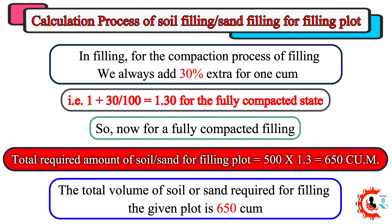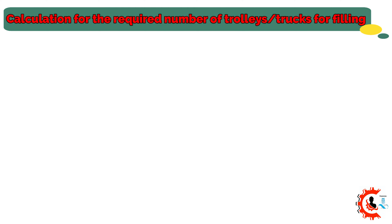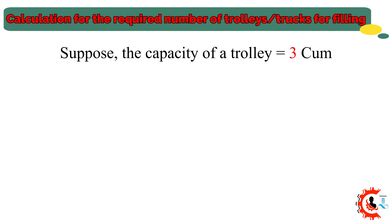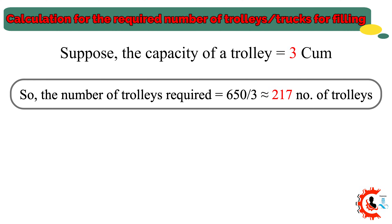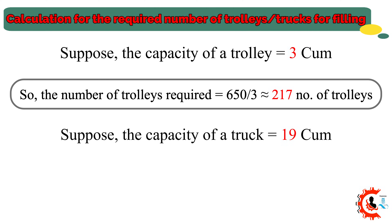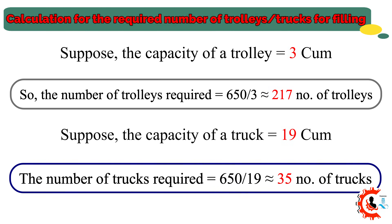The total volume of soil or sand required for filling the given plot is 650 cubic meters. For the required number of trolleys, suppose the capacity of a trolley equals 3 cubic meters, so the number of trolleys required equals 650 divided by 3, approximately equal to 217 trolleys. Suppose the capacity of a truck equals 19 cubic meters, so the number of trucks required equals 650 divided by 19, equal to 35 trucks.